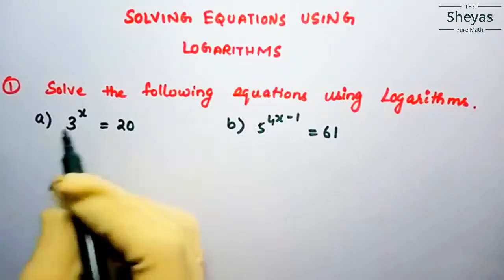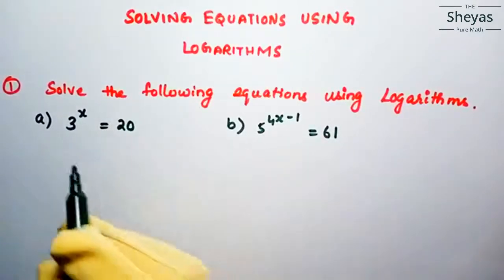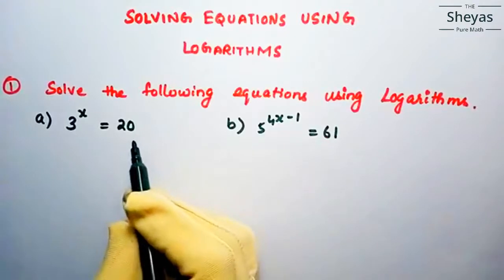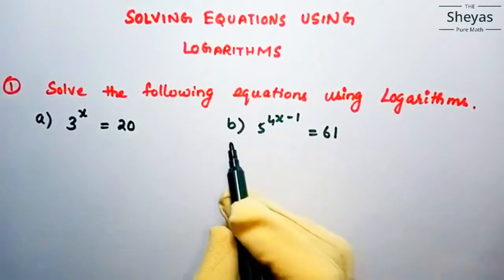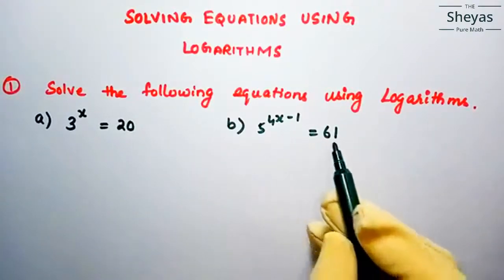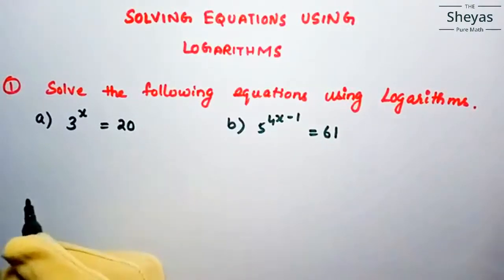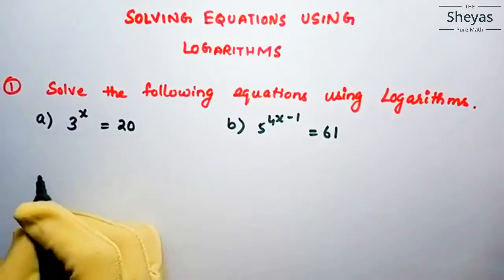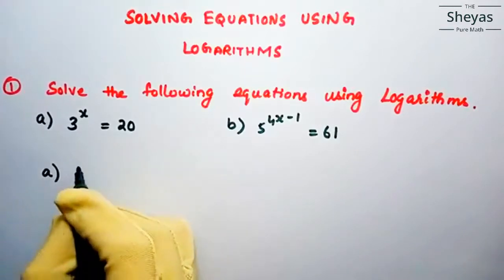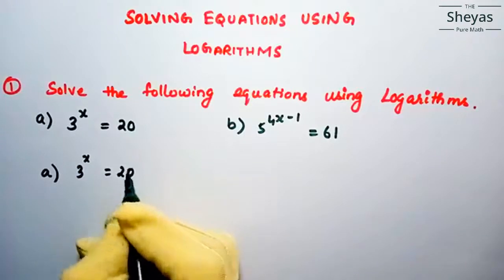So the first problem: solve the following equations using logarithms. A: 3 power x is equal to 20, and B: 5 power 4x minus 1 is equal to 61. Let me start with the first problem — 3 power x is equal to 20.